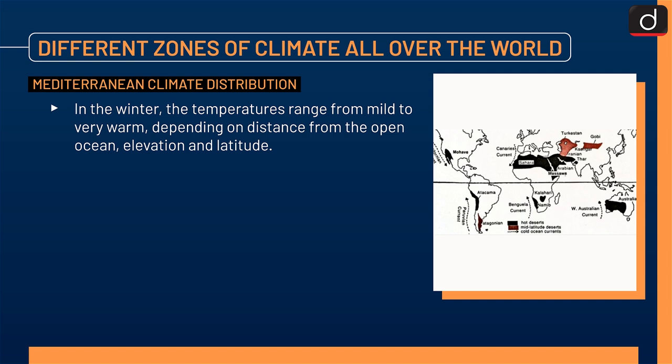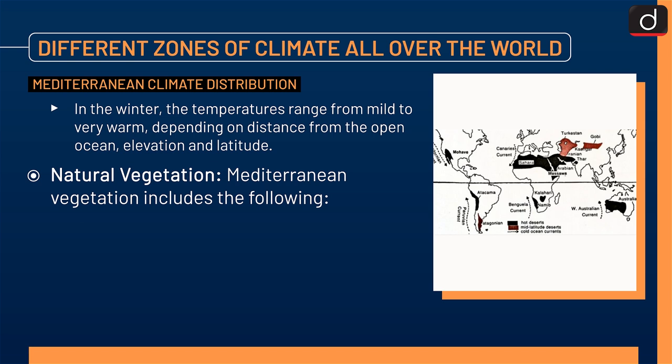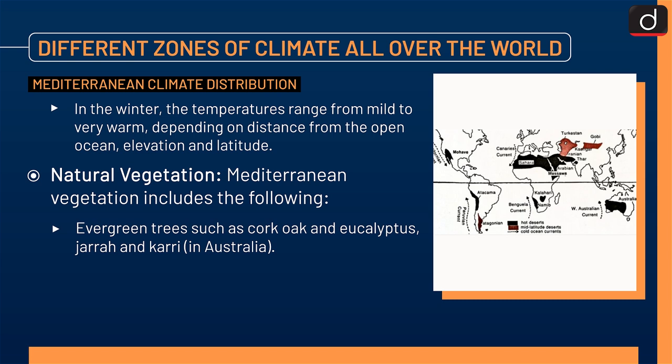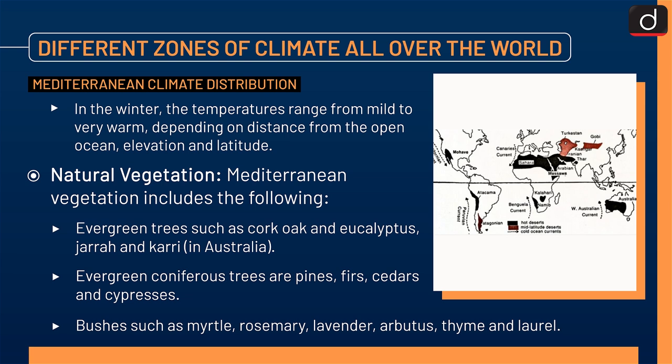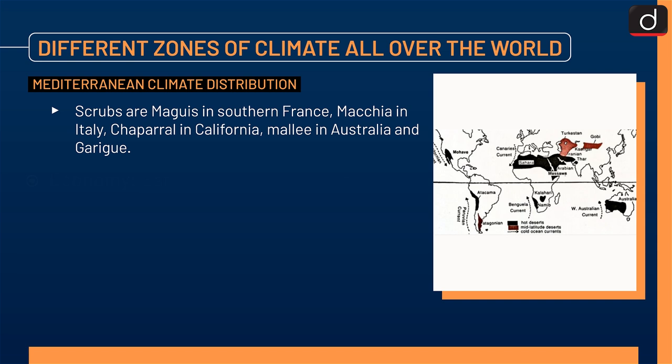Natural vegetation of the Mediterranean climate includes: evergreen trees such as cork, oak and eucalyptus, jarrah and karri in Australia. Evergreen coniferous trees are pines, cedars and cypresses. Bushes such as Myrtle, Rosemary, Lavender, Arbutus, Thyme and Laurel. Scrubs are Maquis in Southern France, Macchia in Italy, Chaparral in California, Mallee in Australia and Garigue.